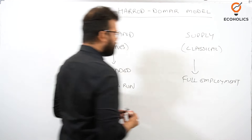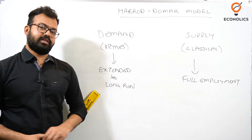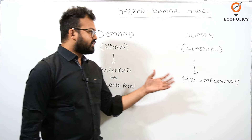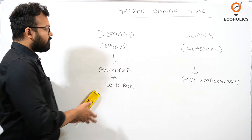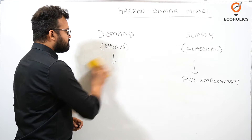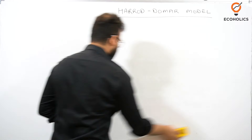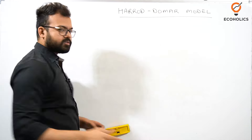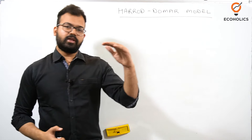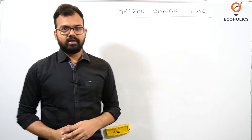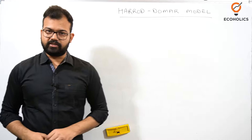In classical economics, economists always talked about the long run, full employment, and the supply side as a major factor in determining income and employment. They gave more importance to capital accumulation. What Harrod and Domar did was combine these two approaches and extend them to the long-run setting, where marginal propensity to consume is constant in the short run, and on the supply side they reached a full employment equilibrium, giving the economy an opportunity to achieve steady-state growth.